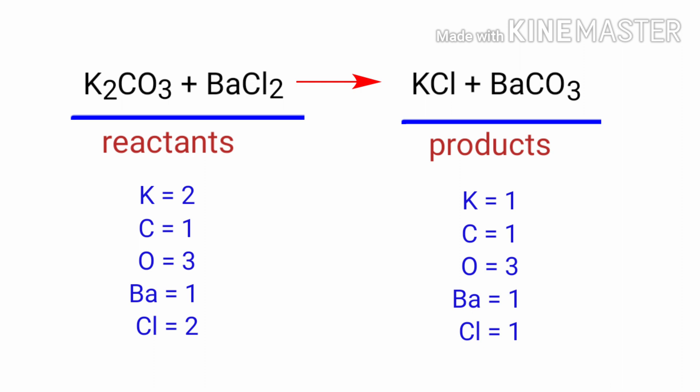On the products side there are one potassium atom, one carbon atom, three oxygen atoms, one barium atom, and one chlorine atom.